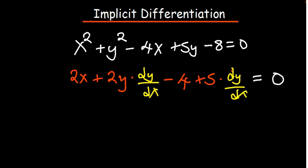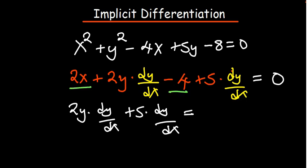Now, at this point, we need to maintain that items that are having y on the left-hand side. So, we have 2y dy/dx. And then, we also have plus 5 dy/dx. So, every other item would have to go the other side. So, we are remaining with 2x and minus 4. So, we have 4 minus 2x.